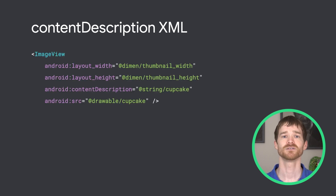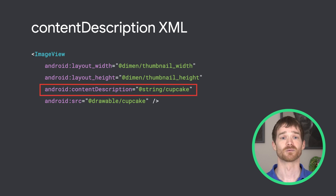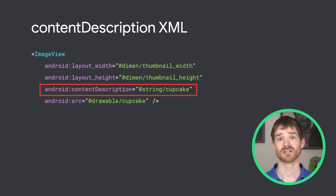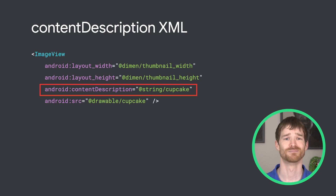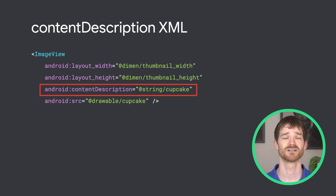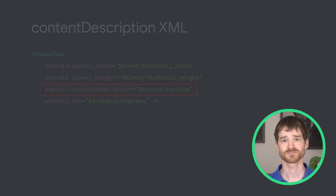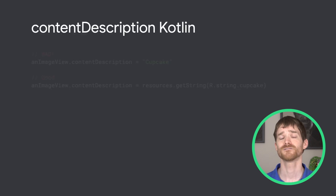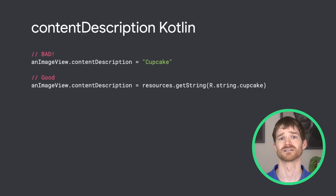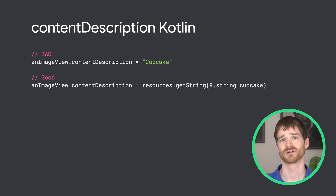To solve this problem, you can set the view's content description, which will be read out by TalkBack. This description should be short, and shouldn't include anything like "button" or "checked," because TalkBack understands the type and state of built-in views. Don't forget that you should also localize content descriptions, so don't hard-code any strings.